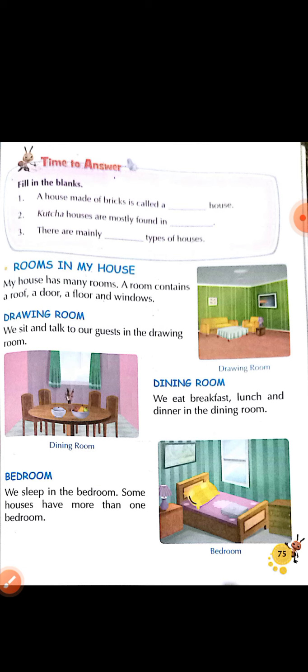Now next, rooms in my house. Mere house mein rooms ke baare mein — my house has many rooms. A room contains a roof, a door, a floor and windows. Mere room mein door hai, floor hai, windows hai, roof hai.